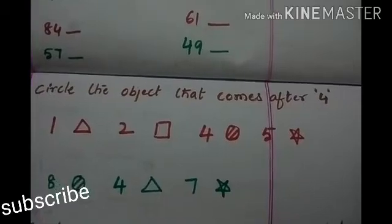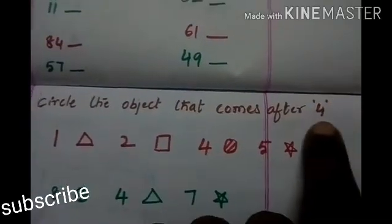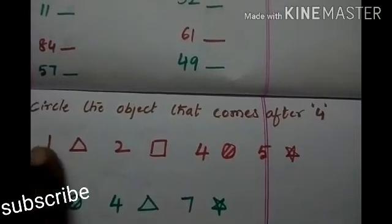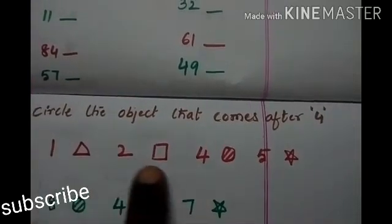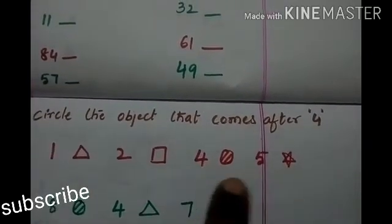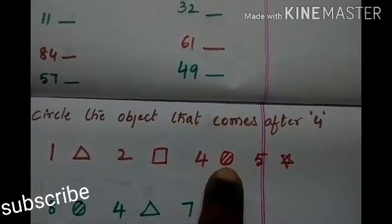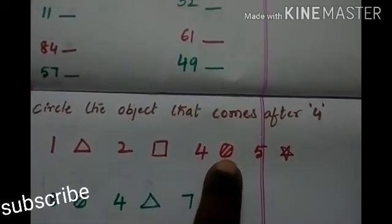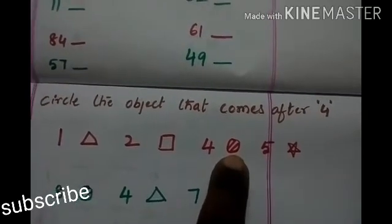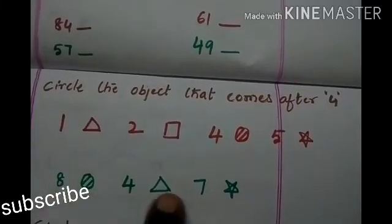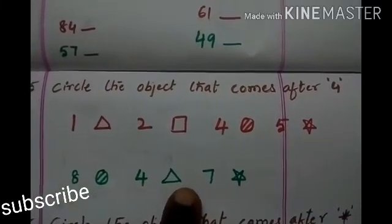Circle the objects that come after 4. That comes after 4 — where is the 4 number in this? Here it is. After 4, what is coming? It is circle. Then after 4, what comes here? Triangle.